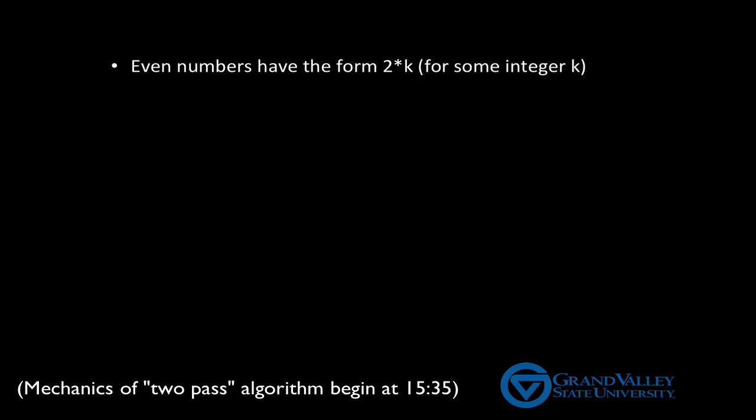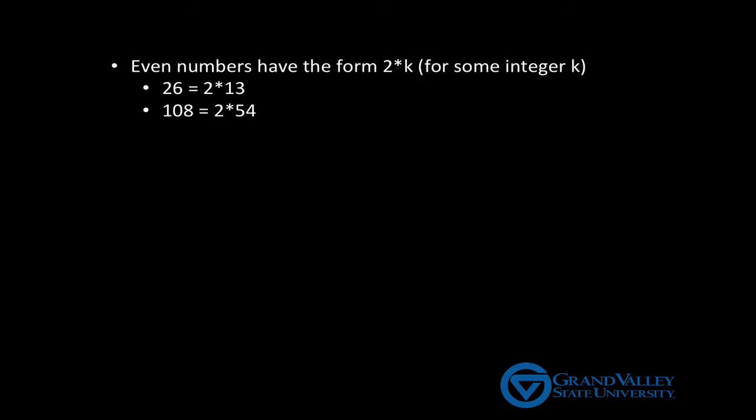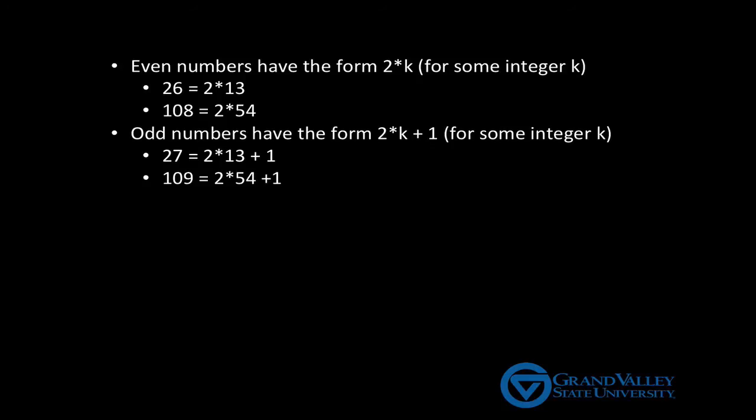First, every even number has the form 2 times k for some integer k. For example, 26 is equal to 2 times 13, so in this case the k would be 13. 108 is equal to 2 times 54. This 2 times k form is the definition of an even integer. Likewise, odd numbers have the form 2 times k plus 1 for some integer k. For example, 27 is 2 times 13 plus 1, and 109 is 2 times 54 plus 1. Again, this 2 times k plus 1 form is the definition of odd.